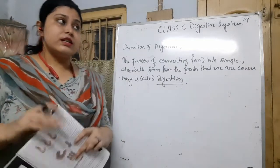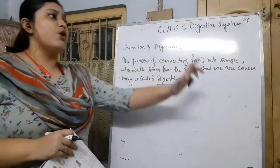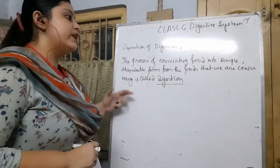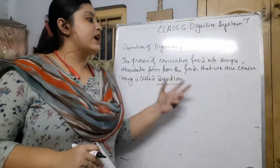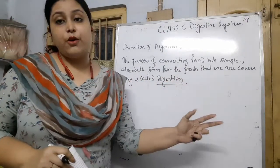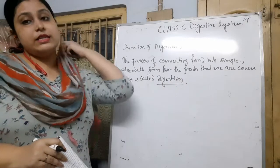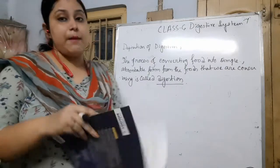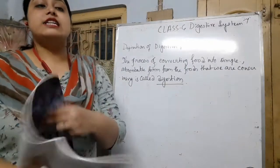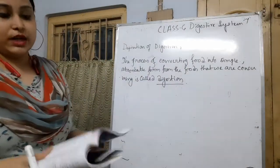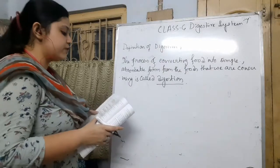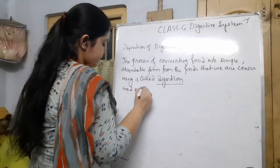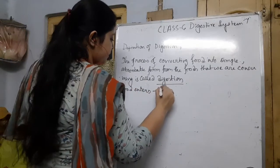Actually, the entire process is called the digestive system, and the function by which foods are broken into simpler form is called digestion. There are many procedures happening one after another. Let me write this as a flow chart. So first, food enters by mouth.